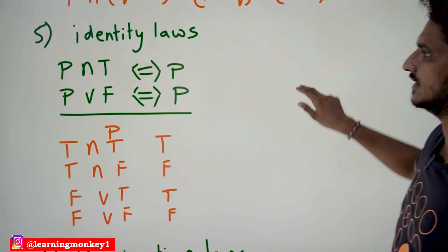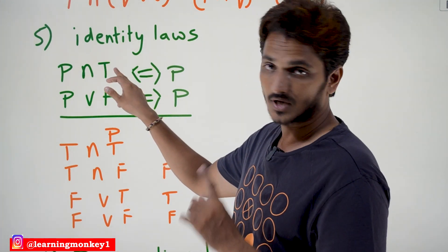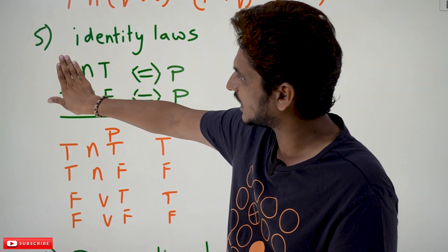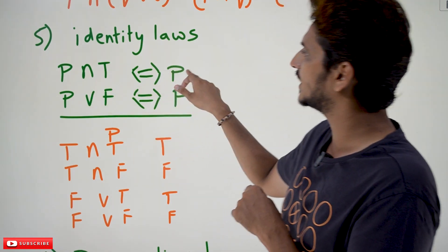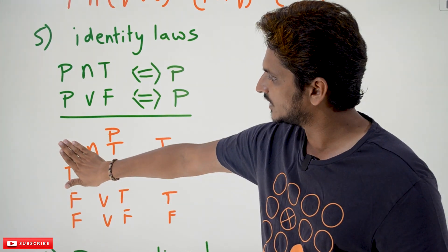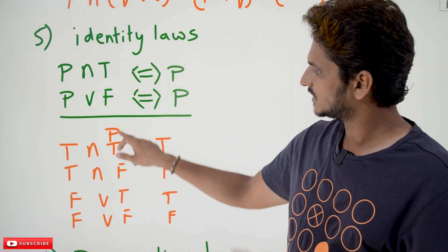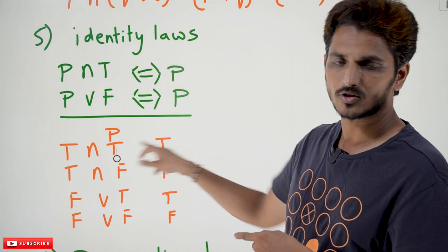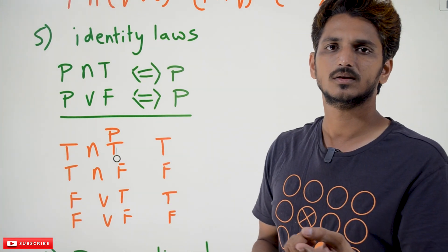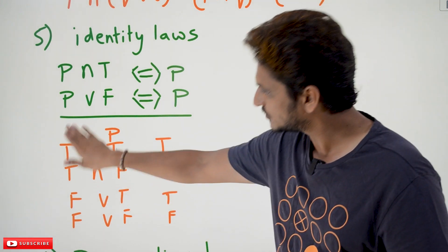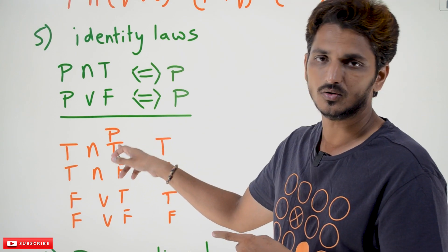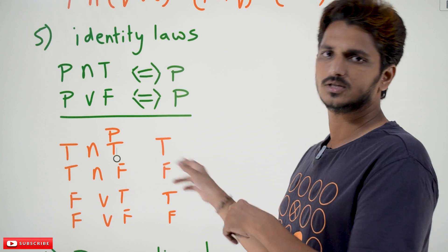The next one is identity laws. P conjunction true equals P — if one value is already true, then conjunction depends entirely on P. If P is true, output is true; if P is false, output is false, so our output is completely based on P. Similarly, P disjunction false equals P — in disjunction, any one is true makes the output true, but one is already given as false, so the output again depends on P.